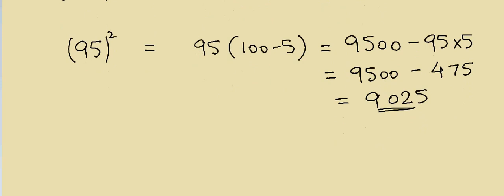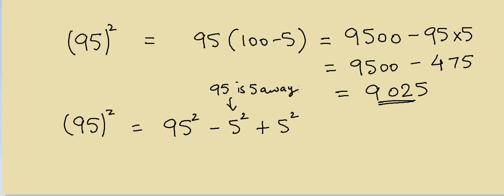Another method: you can write 95 squared as 95² minus 5² plus 5². How did I come up with 5? Because 95 is 5 away from 100.